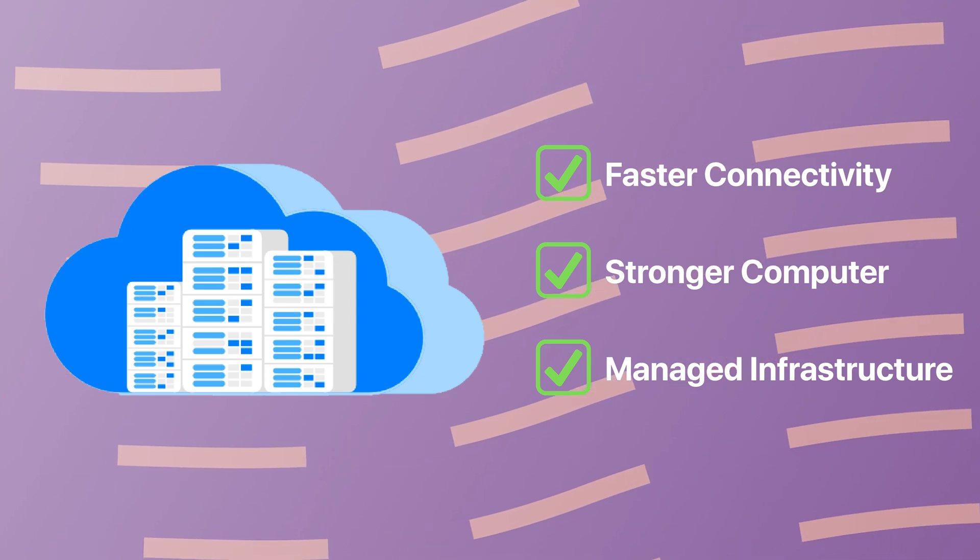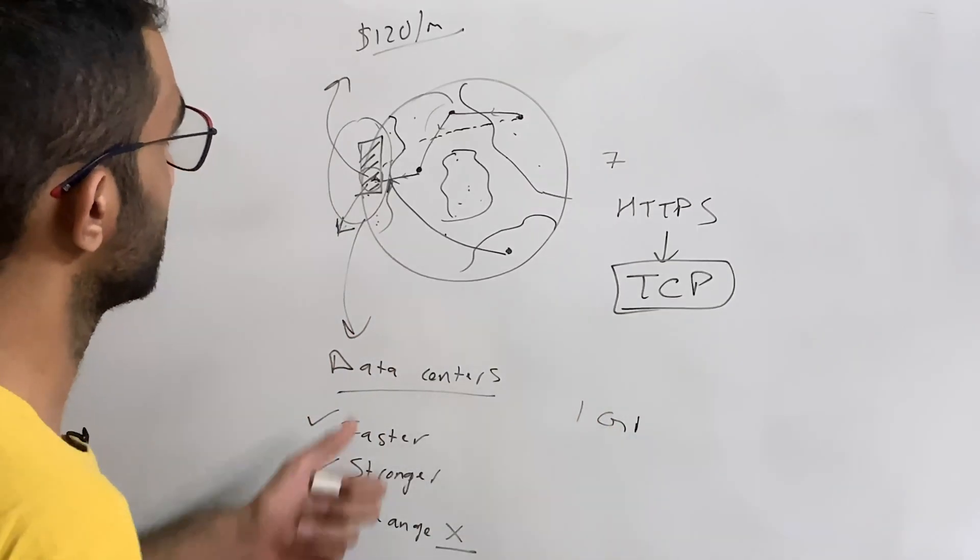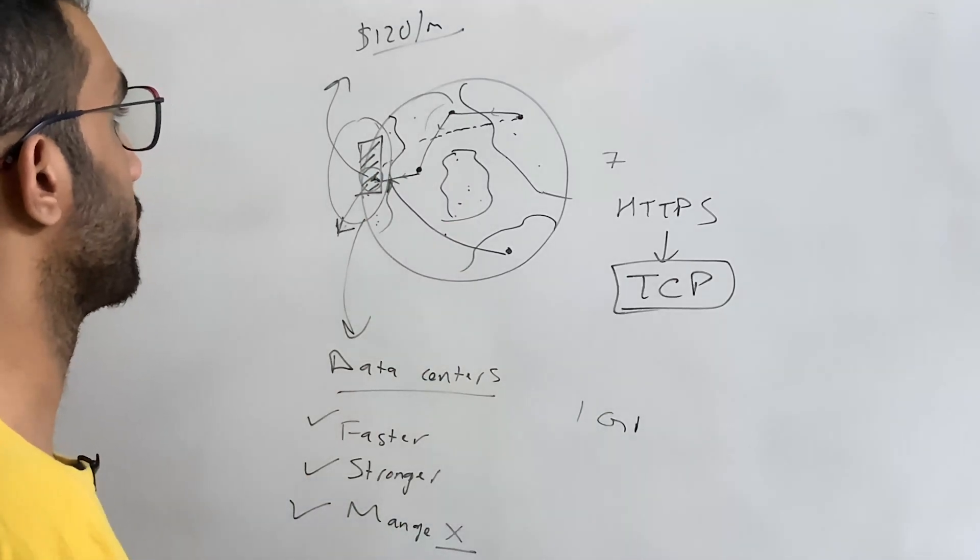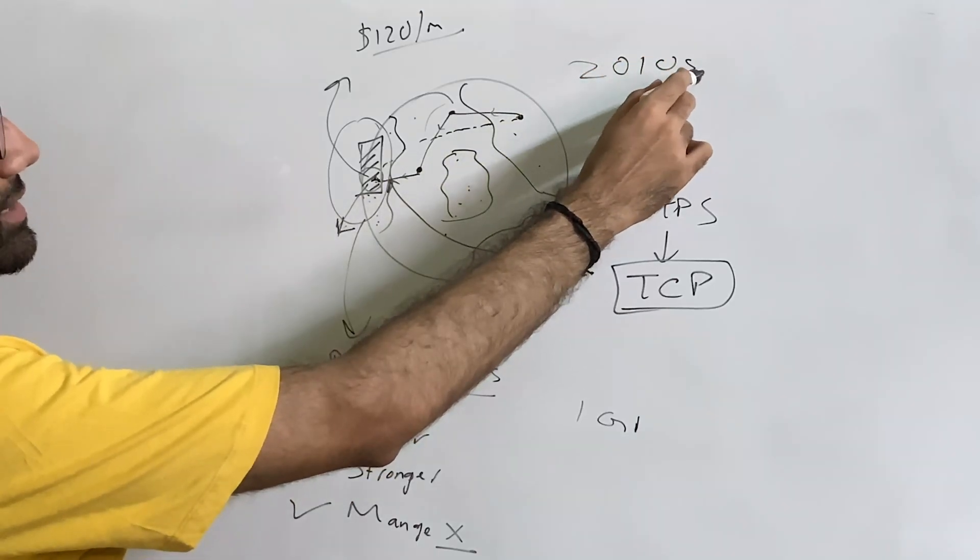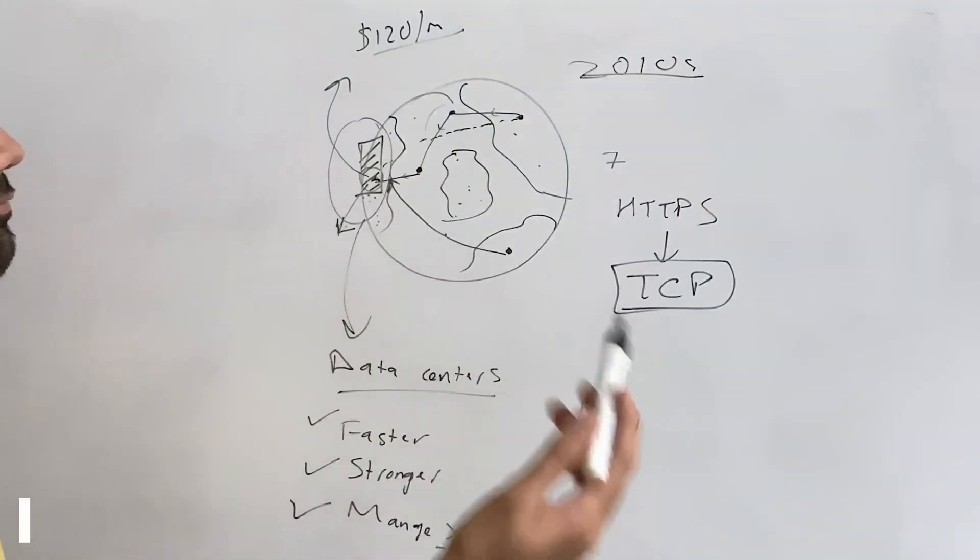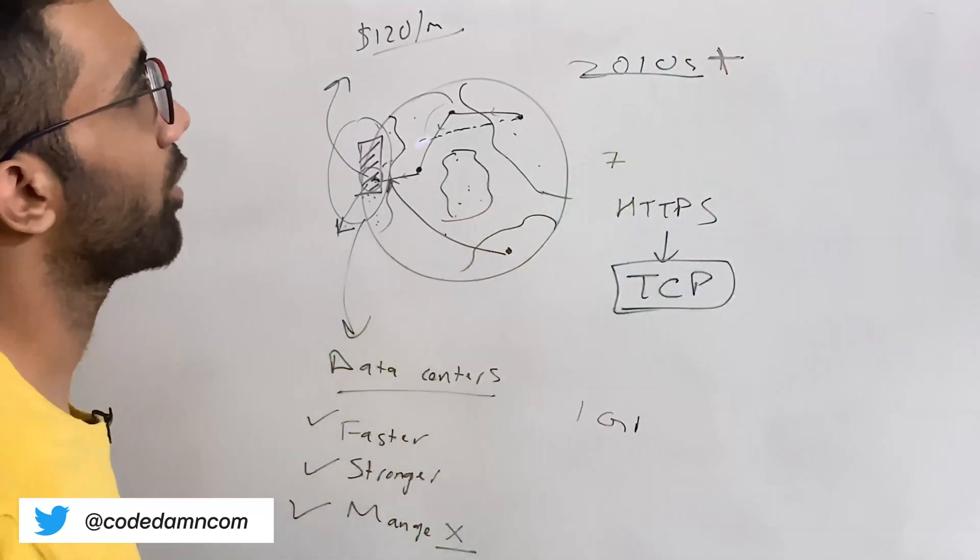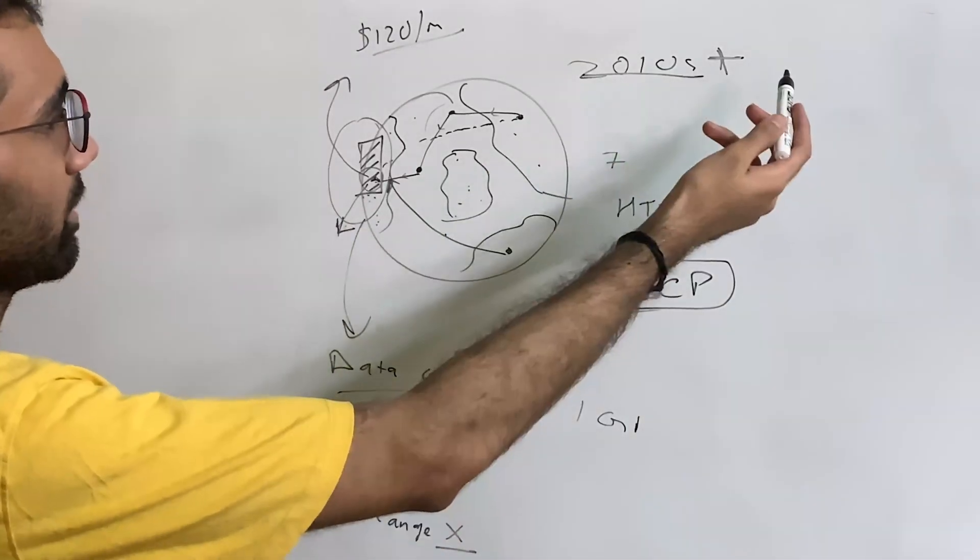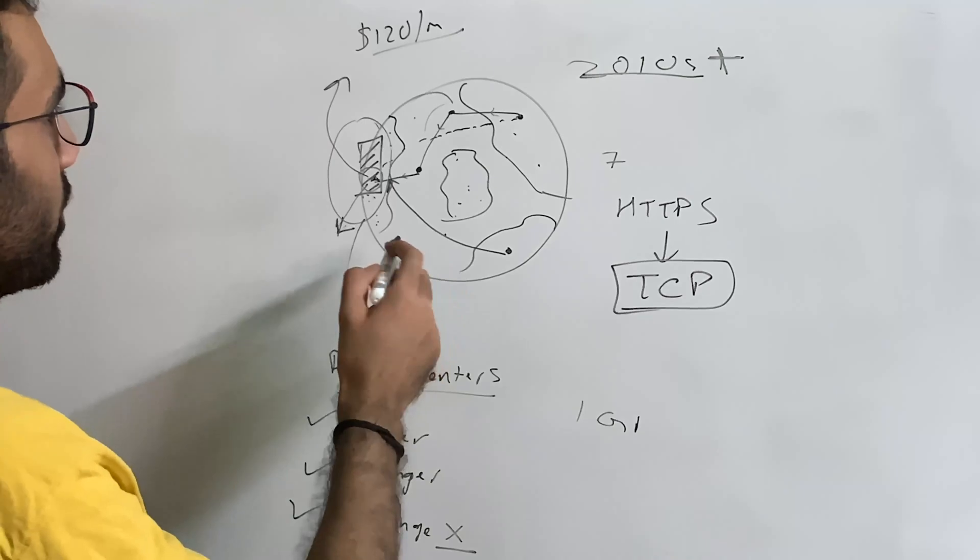Now you have a faster connectivity, you have a stronger computer, and the best part is you don't have to manage this infrastructure yourself. If you wanted to do this in early 2000s when the cloud wasn't there, you would have to set up your own data center and hardware and everything. Maybe like 2010 and plus it started getting popular among regular developers as well. A regular person sitting in India could spin up a server sitting in US and don't have to worry about all the hardware.